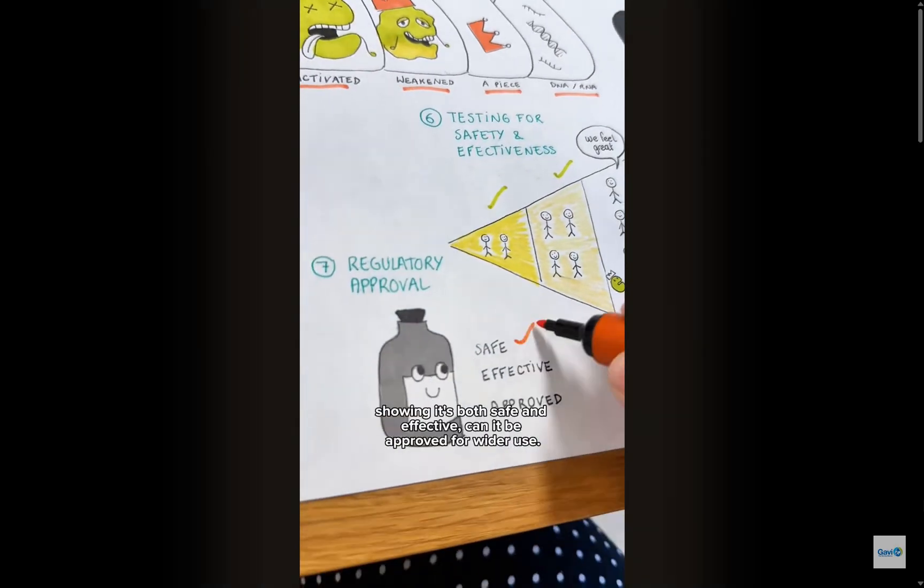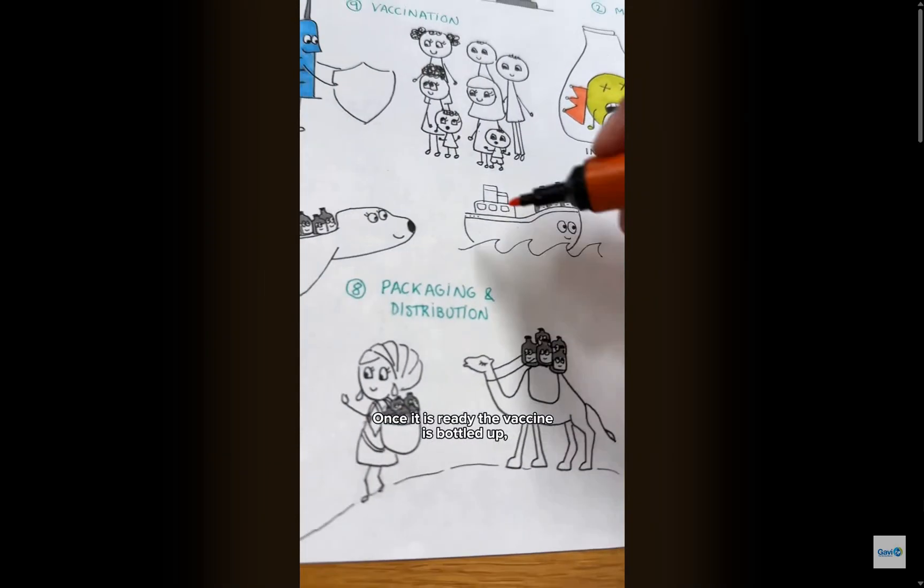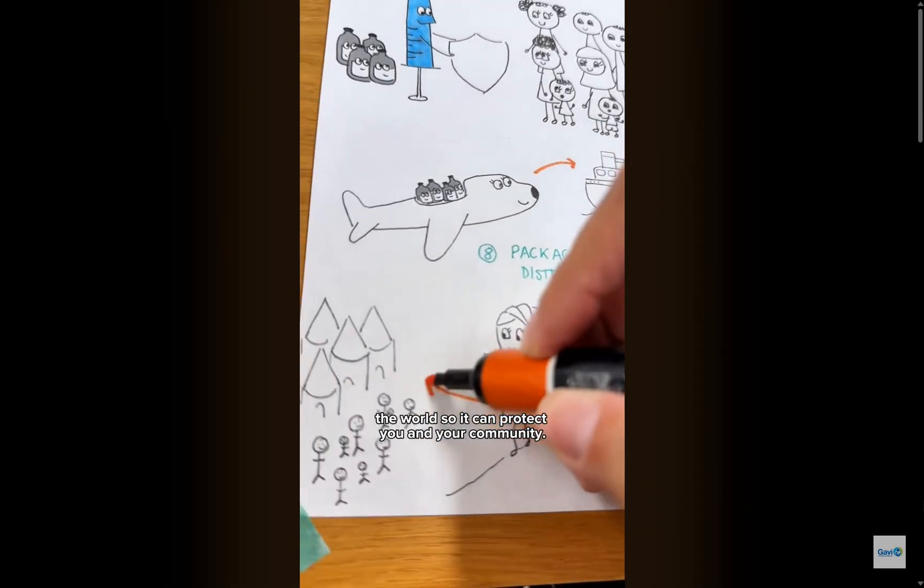Only after the vaccine passes these tests, showing it's both safe and effective, can it be approved for wider use. Once it is ready, the vaccine is bottled up, labeled, and shipped off to clinics all around the world so it can protect you and your community.